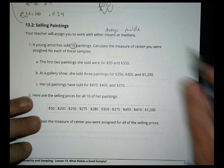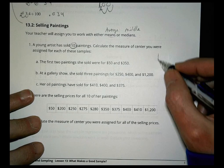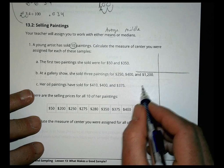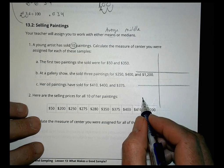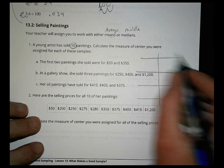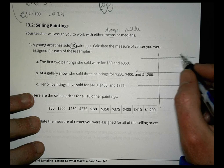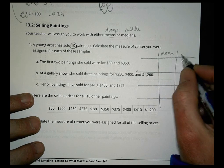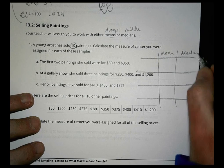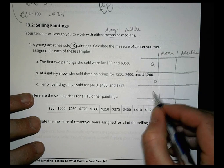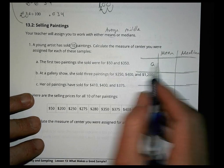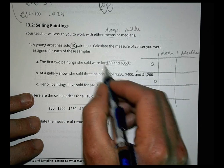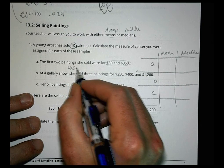I'm going to make a little chart with samples A, B, and C, and columns for mean and median. For sample A, we have two paintings priced at 50 and 350. To find the mean, we add those together: 50 plus 350 is 400.